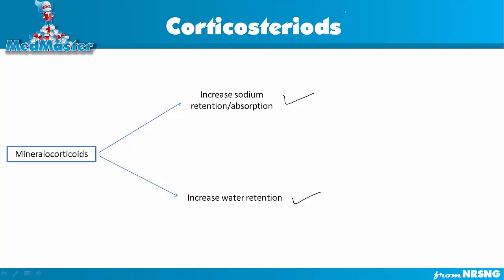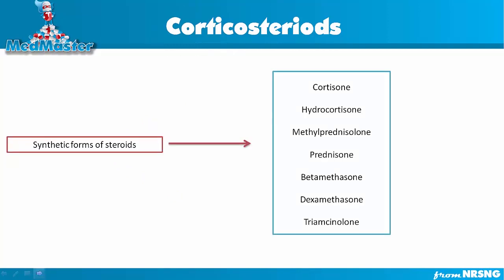Coming back to our main point: corticosteroid drugs. Corticosteroid medications are nothing but a synthetic form of steroids — man-made corticosteroids. All these are produced by the adrenal gland and include cortisone, hydrocortisone, methylprednisolone, prednisone, betamethasone, dexamethasone, and triamcinolone. These medications work exactly the same as the natural glucocorticoids and mineralocorticoids.